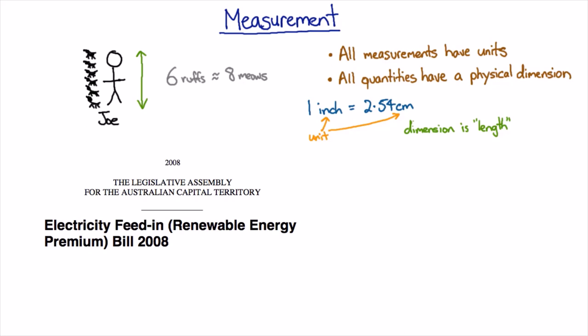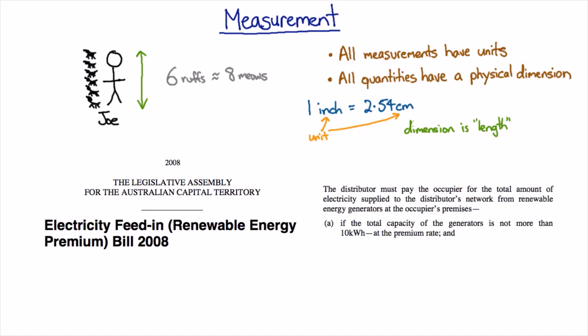But in order to not distort the market commercially, they put a cap on how many solar panels you could put on your roof and said that households would only get the full price if they had up to 10 kilowatt hours of generating capacity on their roof.